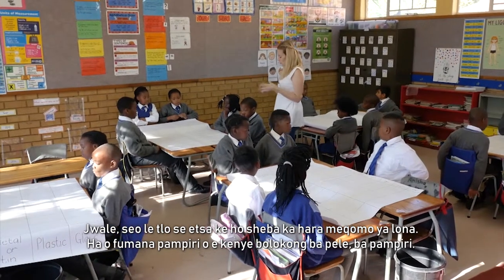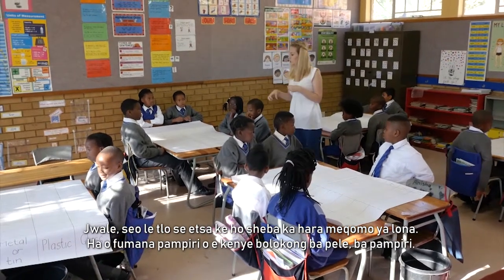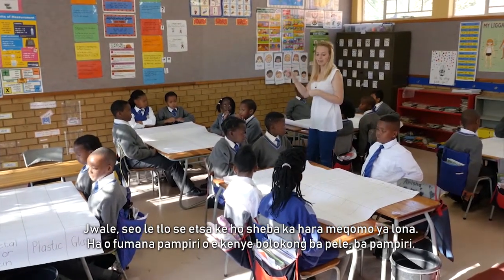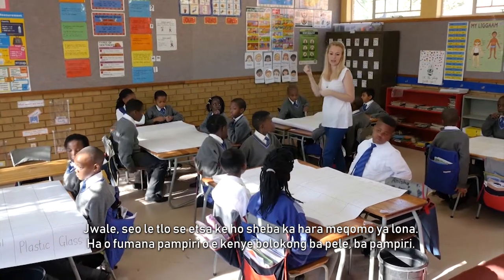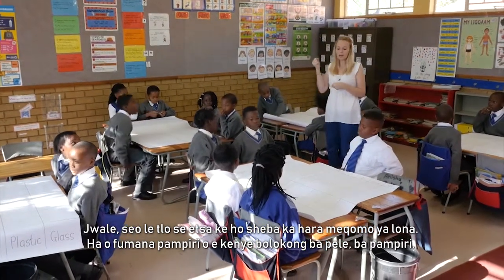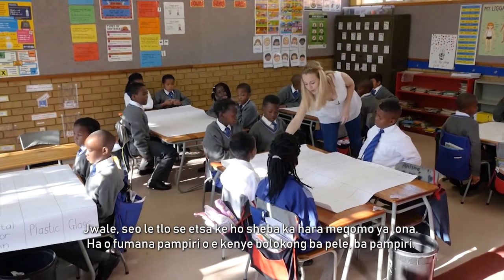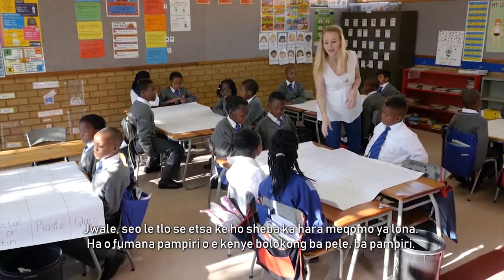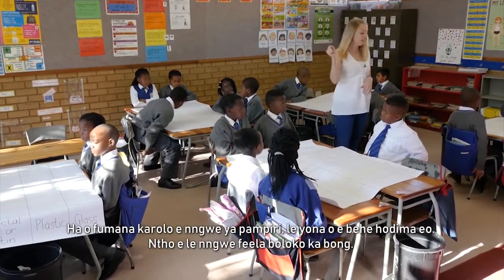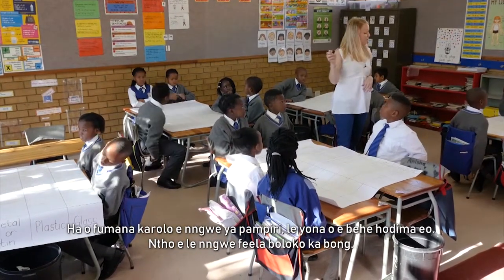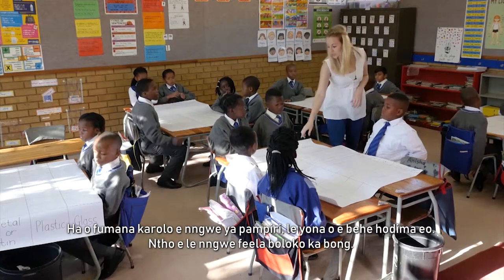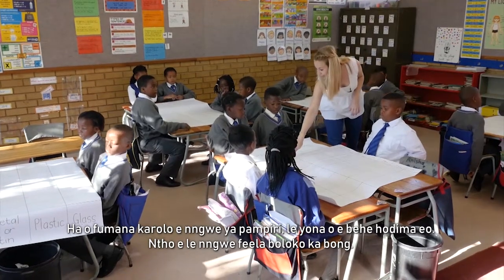So what you're going to do is look in your dustbins. If you pick up something and it's paper, you're going to put it in the first block. If you get another piece that's paper, you're going to put it on top there.